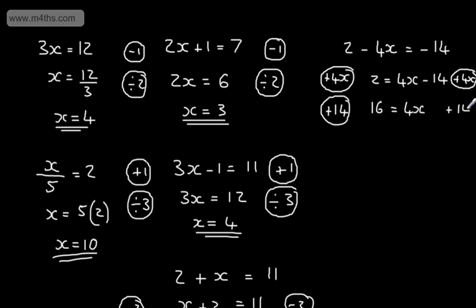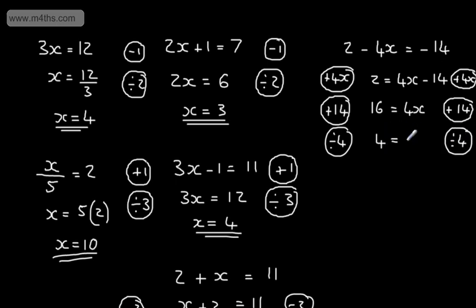I then simply divide both sides by 4, giving 16 over 4 equal to x, so x equals 4. All I've done is rearrange the equation — it doesn't matter if we've got a negative; we can simply deal with it like so. There is an alternative approach, but this is a perfectly fine way of doing it.